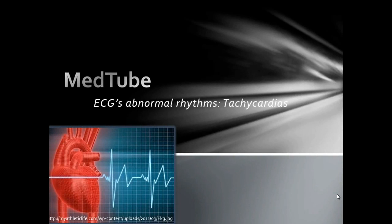Hello everybody and greetings from MedTube channel for medical education. Today's topic is the last of cardiac abnormal rhythms — the tachycardias, defined as any cardiac rhythm with a heart rate of more than 100 beats per minute. There are many classifications used to classify the tachycardias, such as the site of the firing focus or the QRS width, but here we are using the regularity of an ECG strip because it's pretty simple to pick up on an ECG.